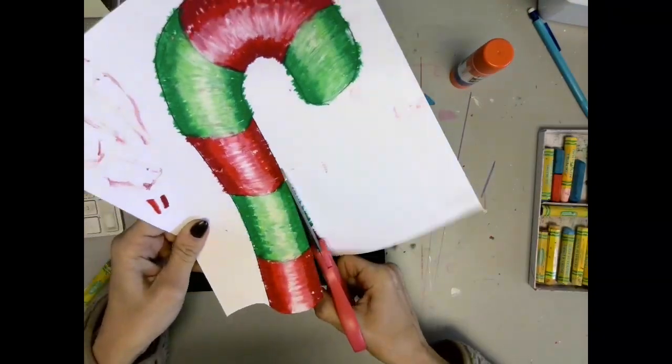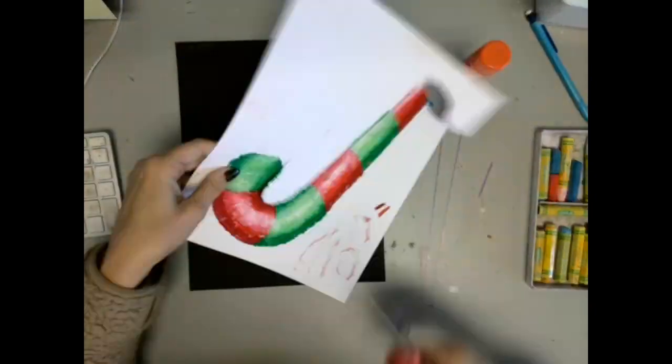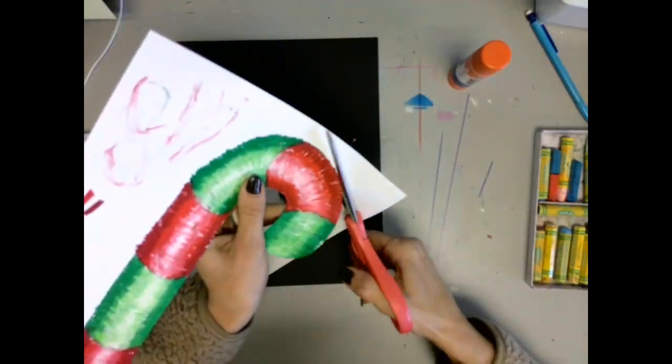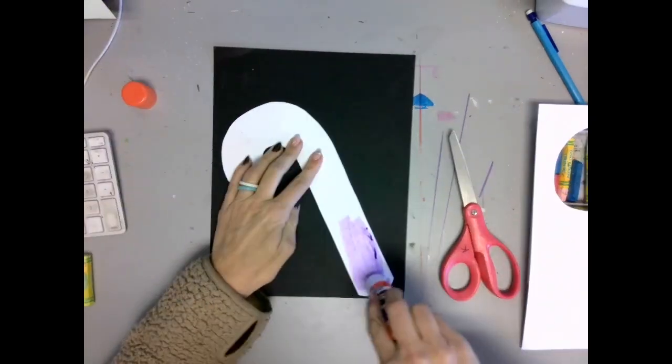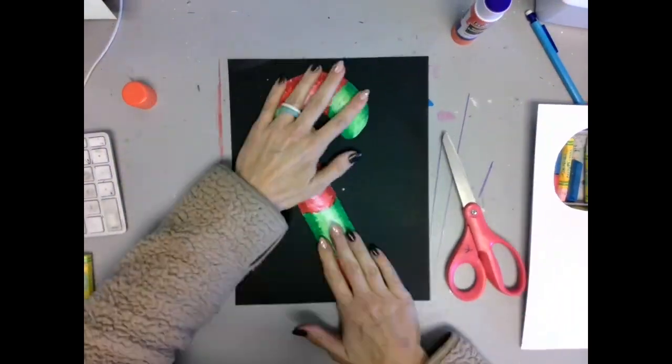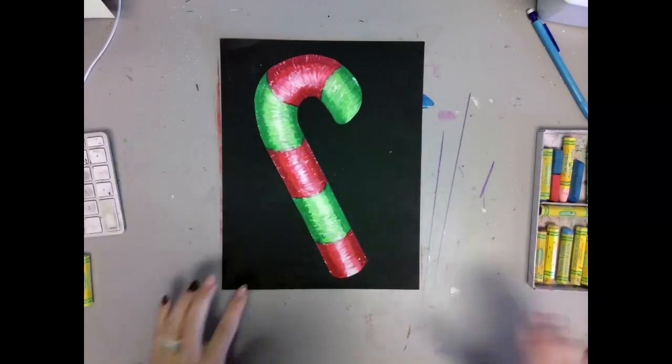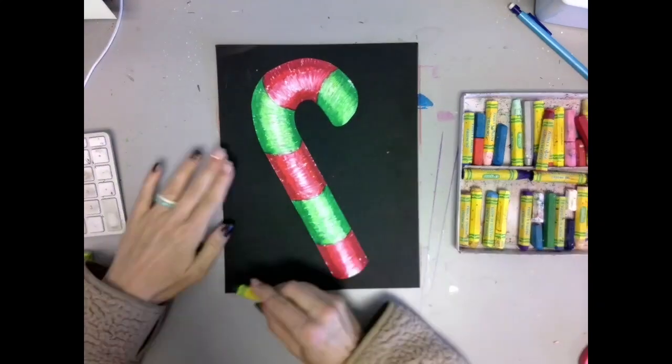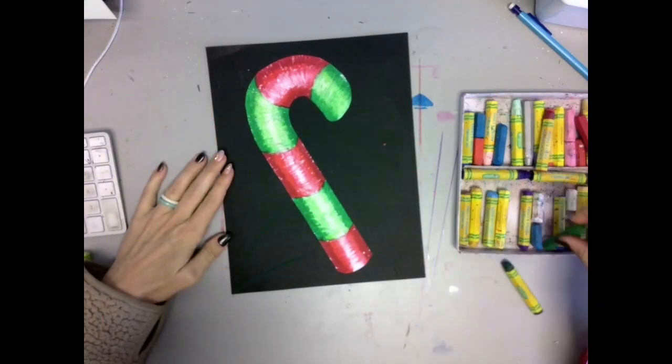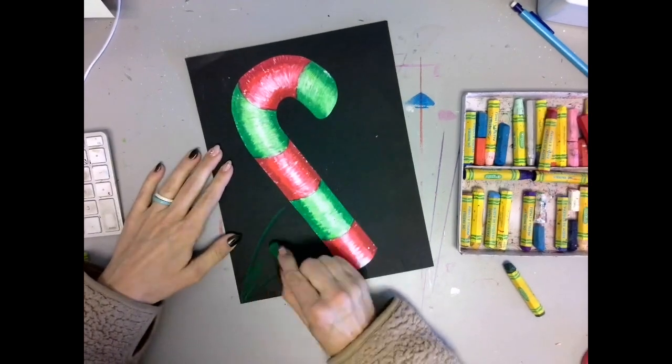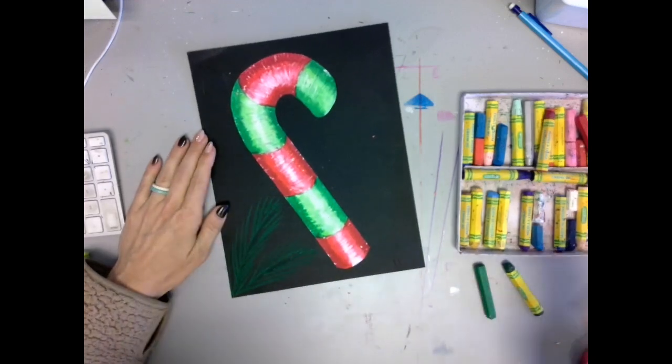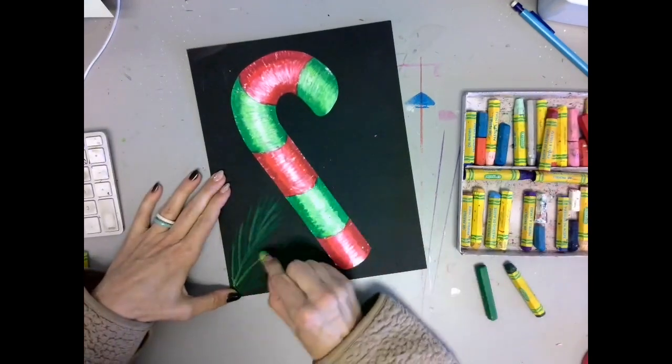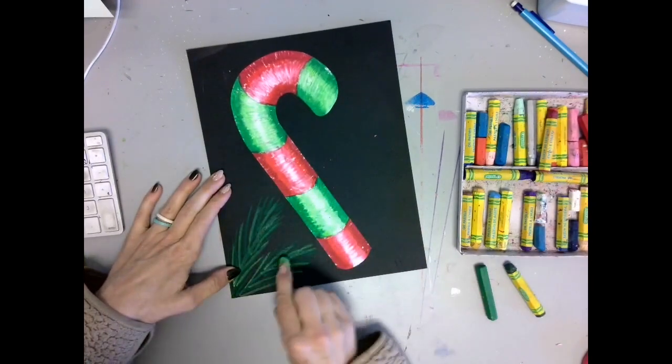Now that we've glued down our candy cane it looks a little bare, so we want to fill in the background to create a nice balanced composition. I'm just using different shades of green oil pastel to create some greenery, kind of like Christmas tree branches.